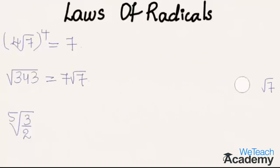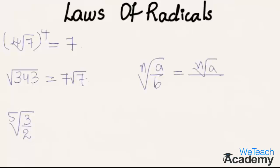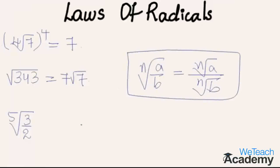The next example is the 5th root of 3 by 2. Using the law that the nth root of a by b equals the nth root of a divided by the nth root of b, we can write the 5th root of 3 by 2 as the 5th root of 3 divided by the 5th root of 2.